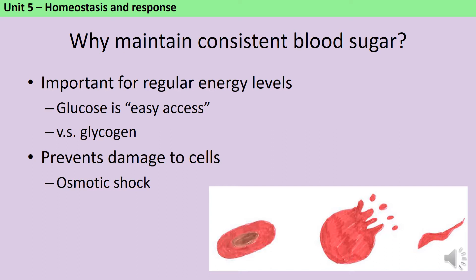This can be really problematic for a few reasons. The first one is about maintaining consistent energy levels. Your cells need glucose in order to perform respiration, which is how they release energy, and they need to do this consistently, so you need consistent blood sugar.